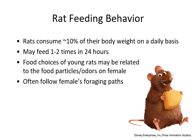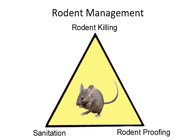Rats consume about 10 percent of their body weight daily and can feed one to two times in a 24-hour period. Interestingly, the food choices of young rats may be related to the food particles and odors on the mother rat, and they often follow her foraging patterns. When managing rodents, we still use that integrated approach — sanitation, proofing or exclusion, and then eradication methods if needed.